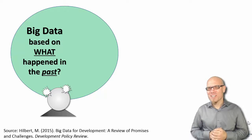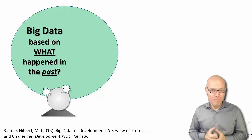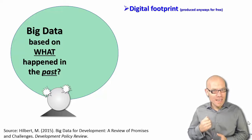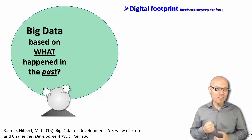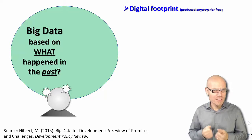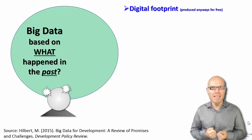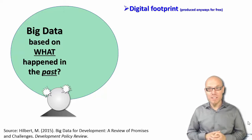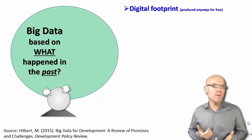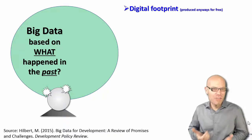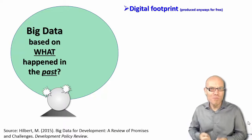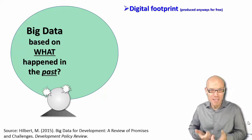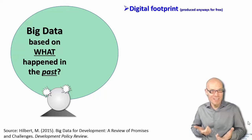First of all, big data has to do with a digital footprint. Especially in the social sciences, you can think of it as the digital footprint we leave behind when we interact through digital networks or with digital equipment. It's produced for free — we don't purposefully put effort into leaving it behind, it's just left behind.